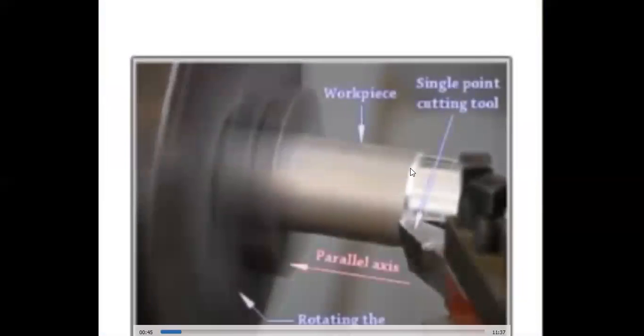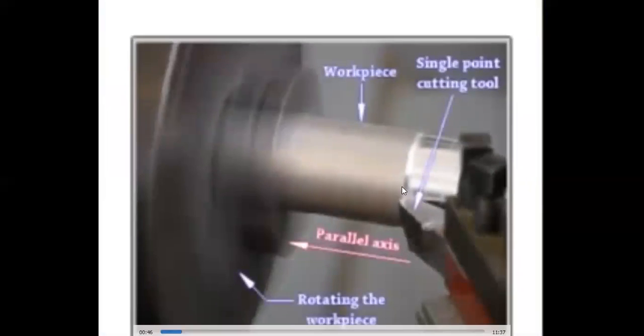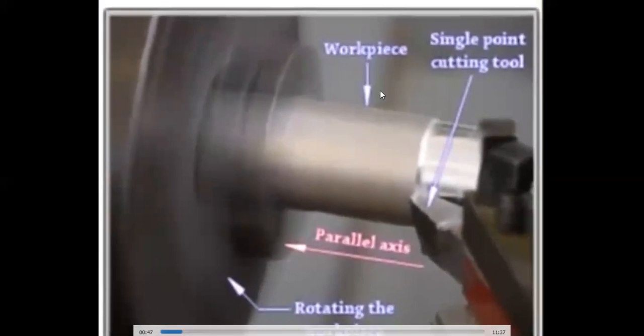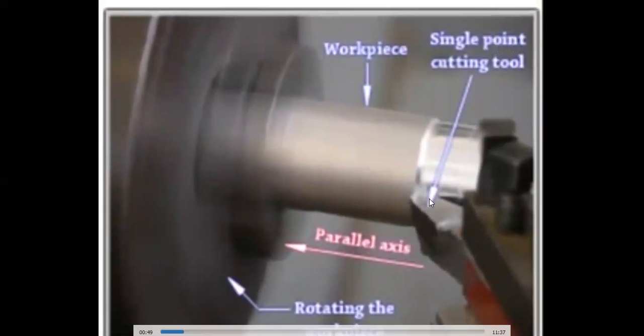Let's see this — how is it going to work? First of all, what are the main functions of this? This is called the workhorse, and this point is a single-point cutting tool, and this is the rotating chuck, and this is the single-point cutting tool.